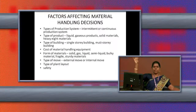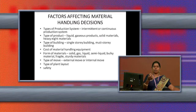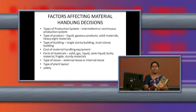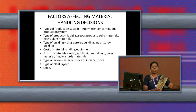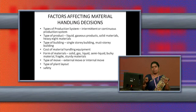Continuous production system means raw material is inserted at one place and finished product comes out at another place. For example, in a sugar manufacturing industry, sugarcane is inserted as raw material, juice is extracted, jaggery is made, then sugar is manufactured, and it is filled into sacks. This is the continuous production system.